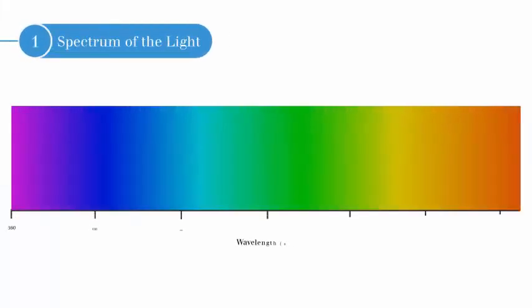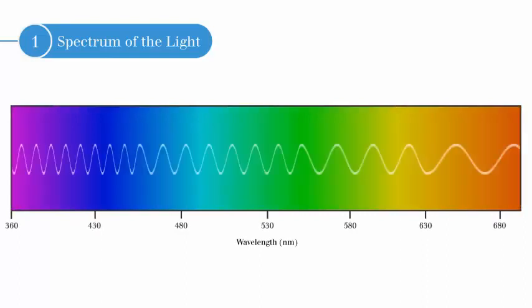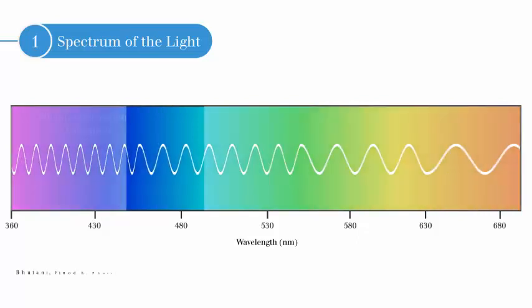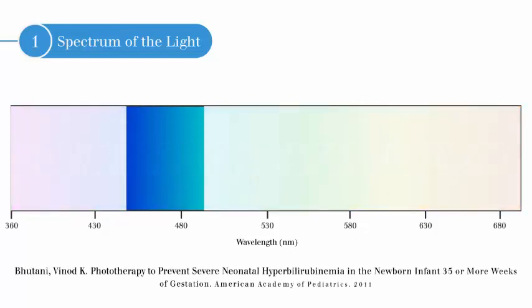The first consideration is the spectrum of light. Light is electromagnetic radiation within a portion of the electromagnetic spectrum. Specific wavelengths of visible light trigger photoisomerization and oxidization. Blue light, the light responsible for breaking down bilirubin in jaundiced babies, is most effective at a wavelength of 460 to 490 nanometers, per the latest reports from the American Academy of Pediatrics.